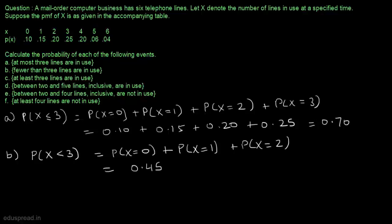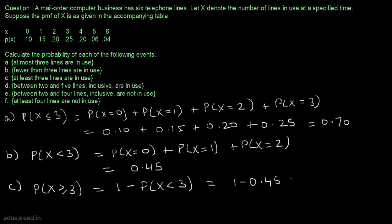In part C, we have to calculate the probability that at least three lines are in use. We have to calculate the probability that x is greater than or equal to 3. We can subtract the probability that x is less than 3 from 1 to get this probability. This equals 1 minus 0.45, which is 0.55.